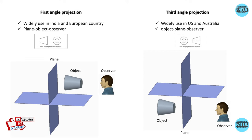In the first angle method of projection, the object is placed in between the observer and the plane. In the third angle of projection, the plane is placed in between the object and the observer. The difference between first and third angle methods is nothing but the placing of the view. Here you can see the symbolic representation of the first angle projection method, and this one is the third angle projection symbol.